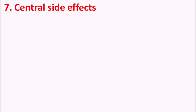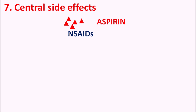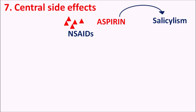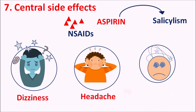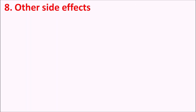The seventh side effect is central side effects. NSAIDs can also affect the central nervous system even though they act peripherally. Particularly, aspirin can produce a set of side effects collectively called salicylism. Aspirin can produce dizziness, headache, vertigo, and reeling sensation in patients. All these are due to disturbance of the vestibular system. These central side effects are observed only with a few NSAIDs such as aspirin.